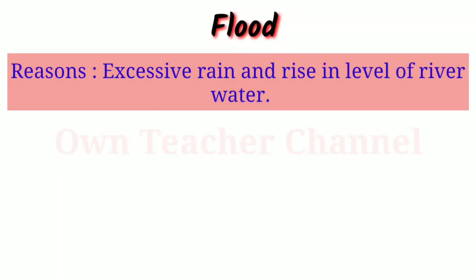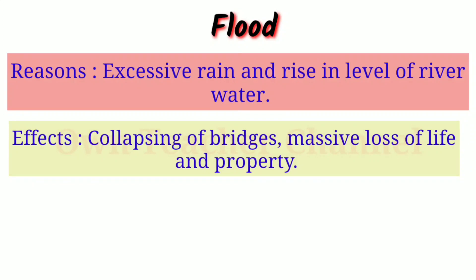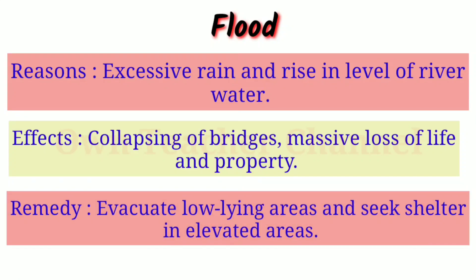Second disaster: Flood. Reasons — excessive rain and rise in the level of river water. Effects — collapsing of bridges, massive loss of life and property. Remedy — evacuate low-lying areas and seek shelter in elevated areas.